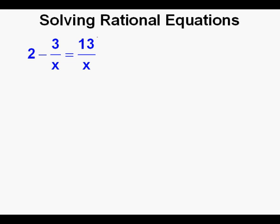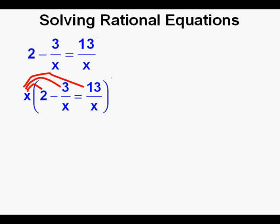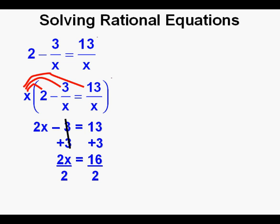Now the next rational equation: 2 minus 3 over x equals 13 over x. To rationalize, or get the x out of the denominator, we multiply both sides of the equation by x, applying the distributive property to all terms. That becomes 2x minus 3 equals 13. We solve for x by first adding 3 to both sides. Negative 3 plus 3 cancel on the left side, leaving 2x equals 16. Next we divide both sides by 2, giving us x equals 8. Substituting 8 back for x in the original equation, both sides are equal — so that's our correct answer.